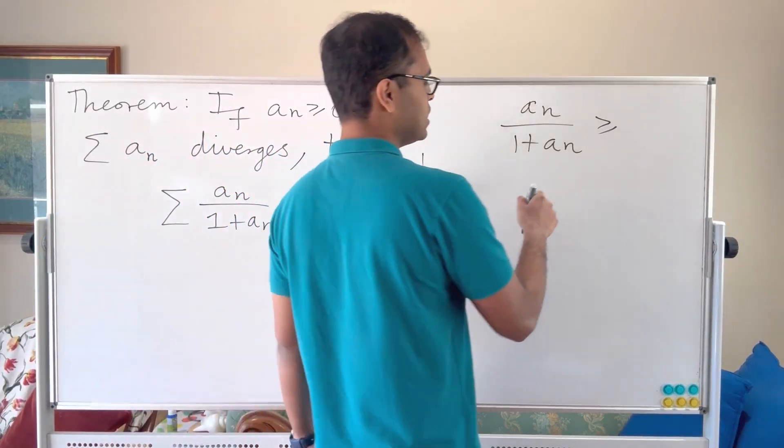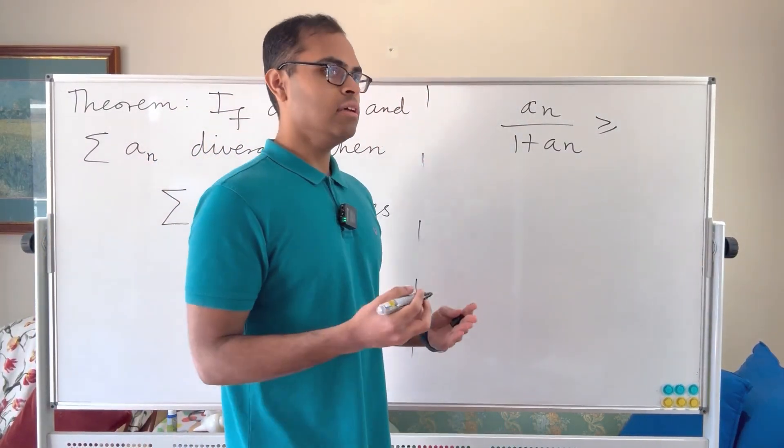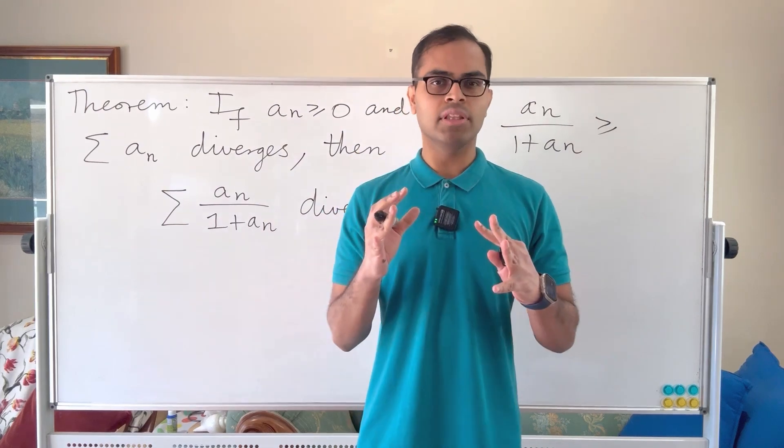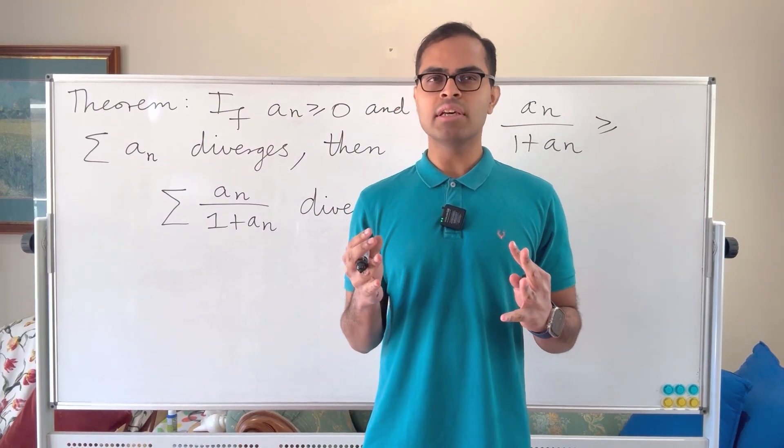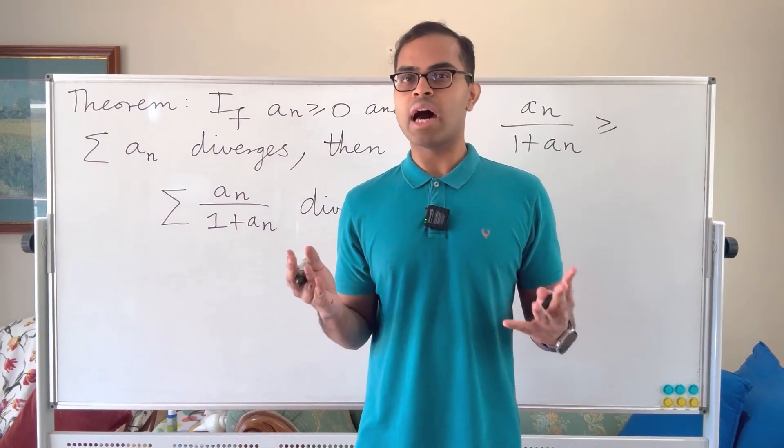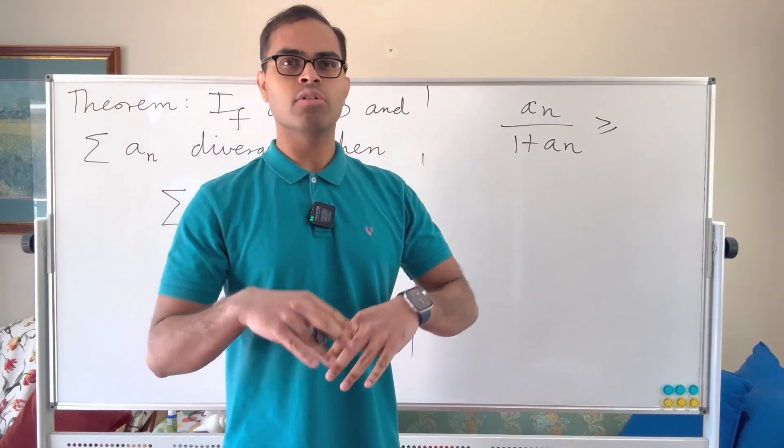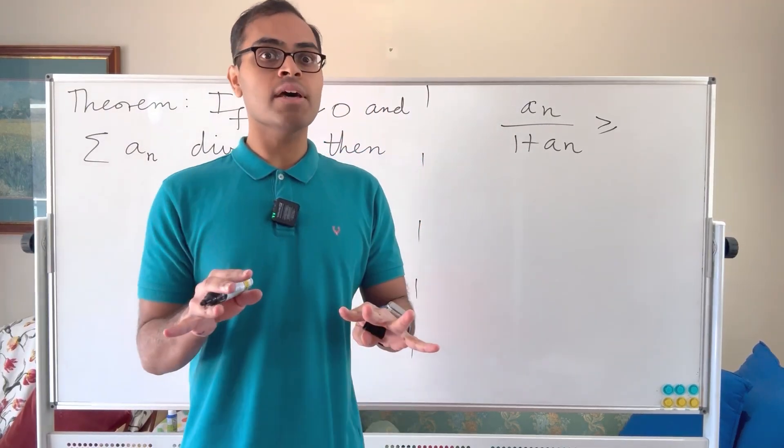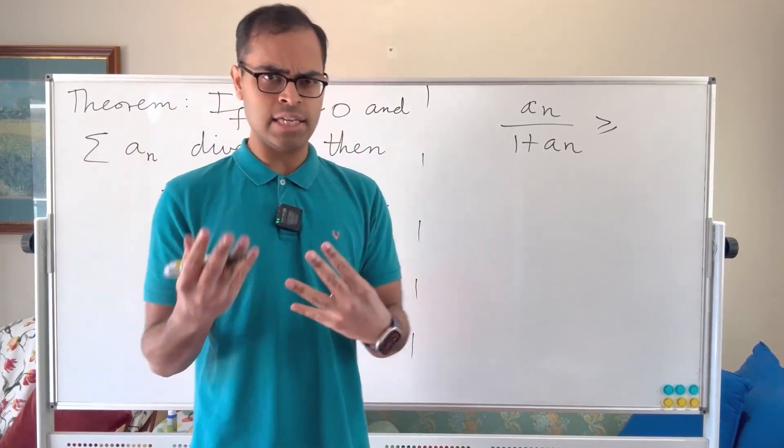The way we like to do this is we say okay, an is a series that diverges. Now assume that an doesn't get too large. So let's say an is less than or equal to 1. Maybe that's a fair assumption, we're going to have to get into that, this is just a thinking process.